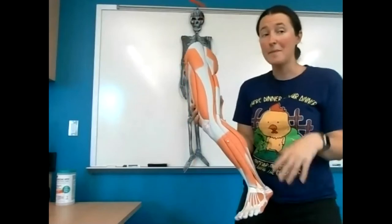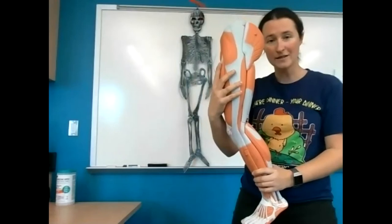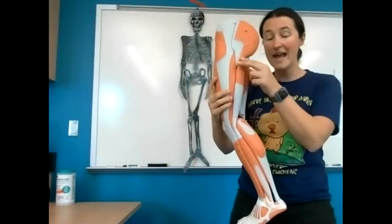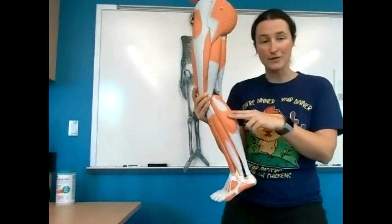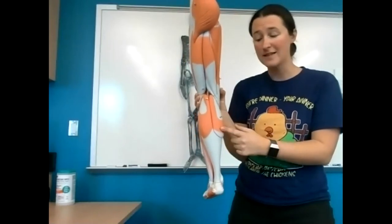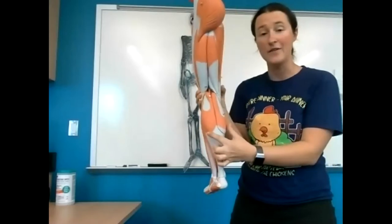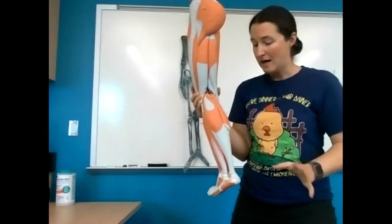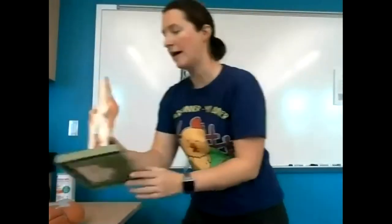For this dissection, I'm asking you to identify the quads on the front of the thigh, the hamstrings on the back of the thigh, and the gastrocnemius — the big, pretty calf muscle. There are actually a lot of calf muscles, but the gastrocnemius is the one we're focusing on today. These are going to be important concepts for the chicken dissection.